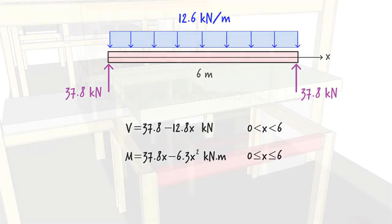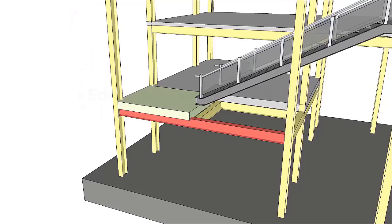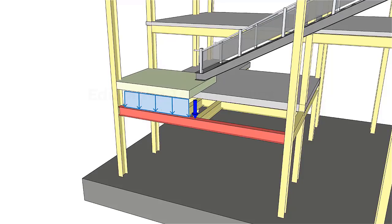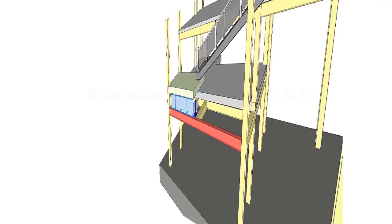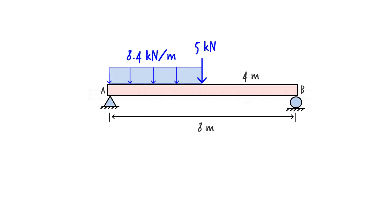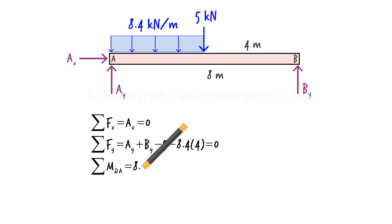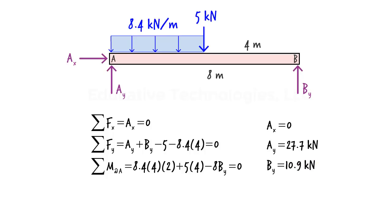Now let's turn to the side beam, which is subjected to two loads: a concentrated load due to the weight of the staircase and a distributed load due to the weight of the concrete floor. The staircase distributes its load to a support beam, which transfers half to the side beam — assumed here to be 5 kN. The distributed load from the concrete floor is 8.4 kN per meter. The beam is 8 meters long with the concentrated load applied at its midpoint. We start by determining the support reactions from the free body diagram and equilibrium equations.